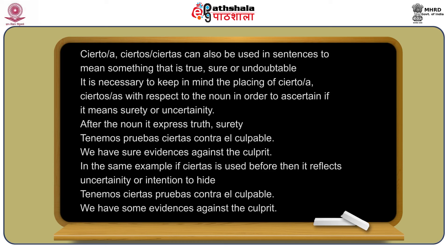After the noun, 'cierto/cierta' expresses truth or surety. Example: 'Tenemos pruebas ciertas contra el culpable' — we have sure evidence against the culprit. If 'ciertas' is used before the noun, it reflects uncertainty or intention to hide. Example: 'Tenemos ciertas pruebas contra el culpable' — we have some evidence against the culprit.